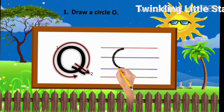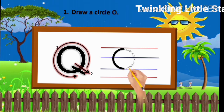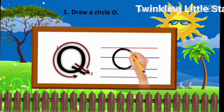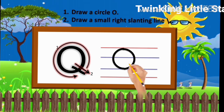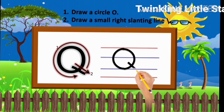Step 1: Draw a circle. Step 2: Draw a small right slanting line.